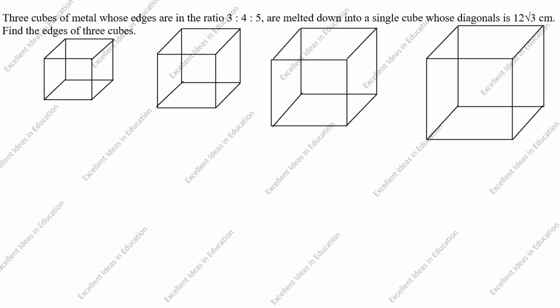Hi students, welcome to my channel Excellent Ideas in Education. Today we are going to solve a surface areas and volume problem. Three cubes of metal whose edges are in the ratio 3:4:5 are melted down into a single cube whose diagonal is 12 root 3 centimeters. Find the edges of the three cubes.